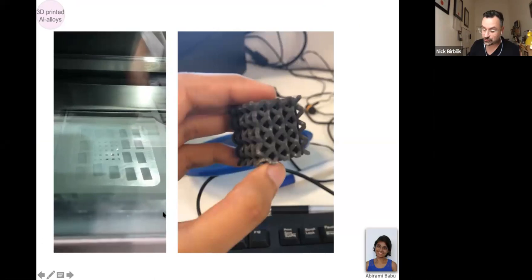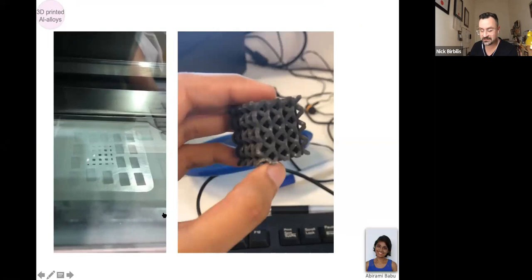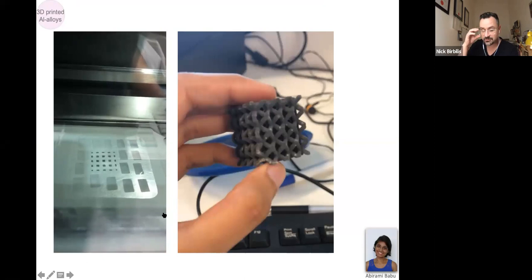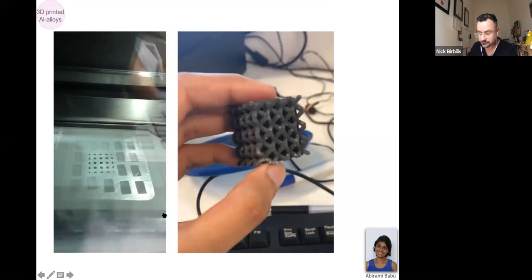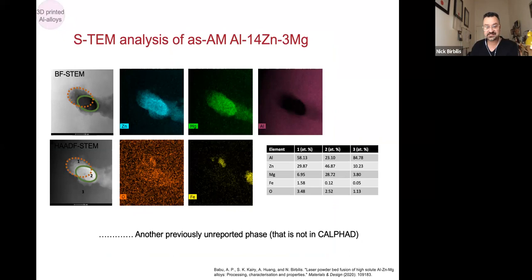But pressing on, what I did want to show you here is that one cool thing about 3D printed aluminium alloys is the ability to make things in net shape. So high strength, lightweight structures in net shape. And what you see here is another example from a student called Abhirami Babu that designed an aluminium alloy with very high solute levels. The reason why this was possible is because of the ability to exploit the conditions in selective laser melting.